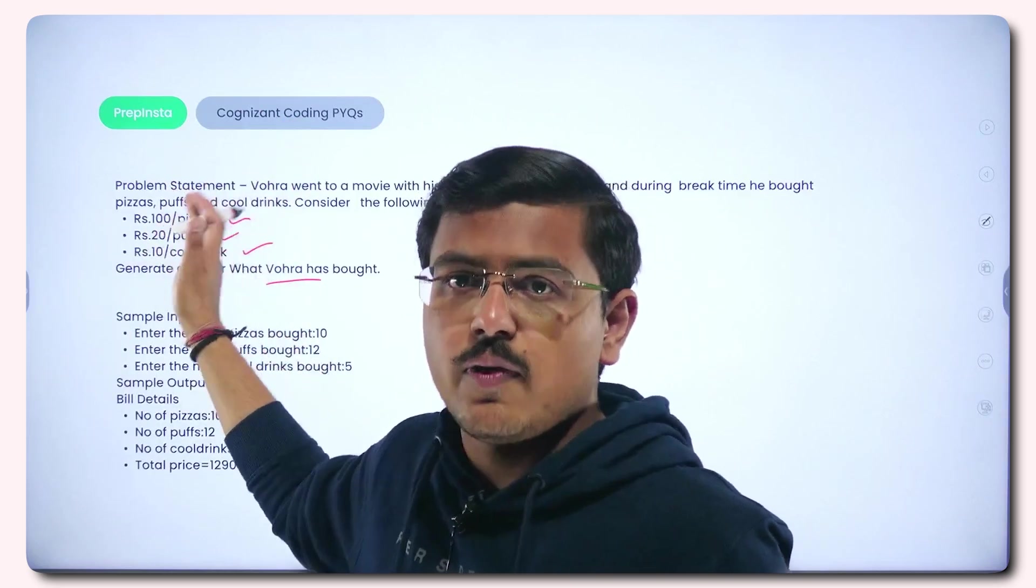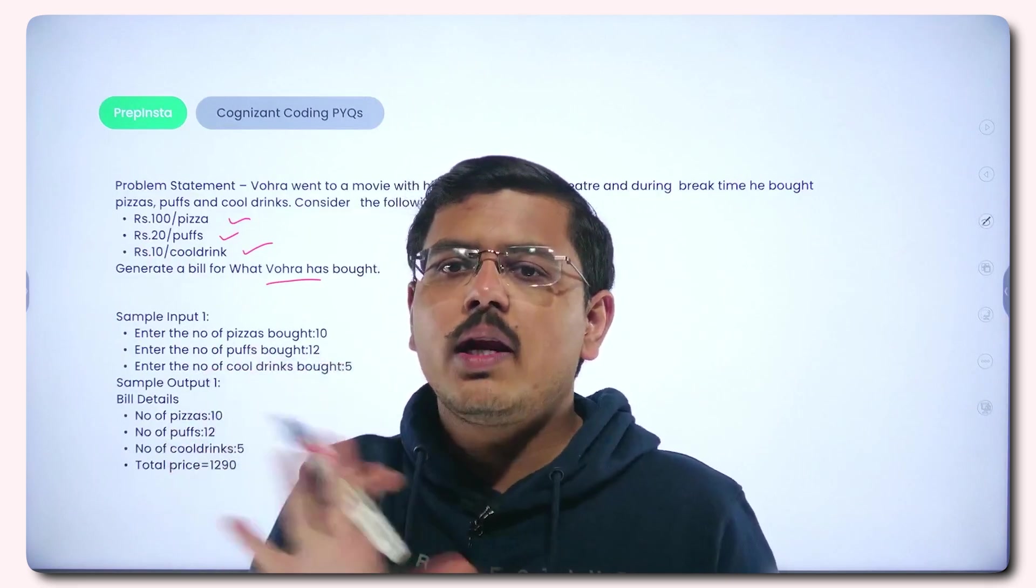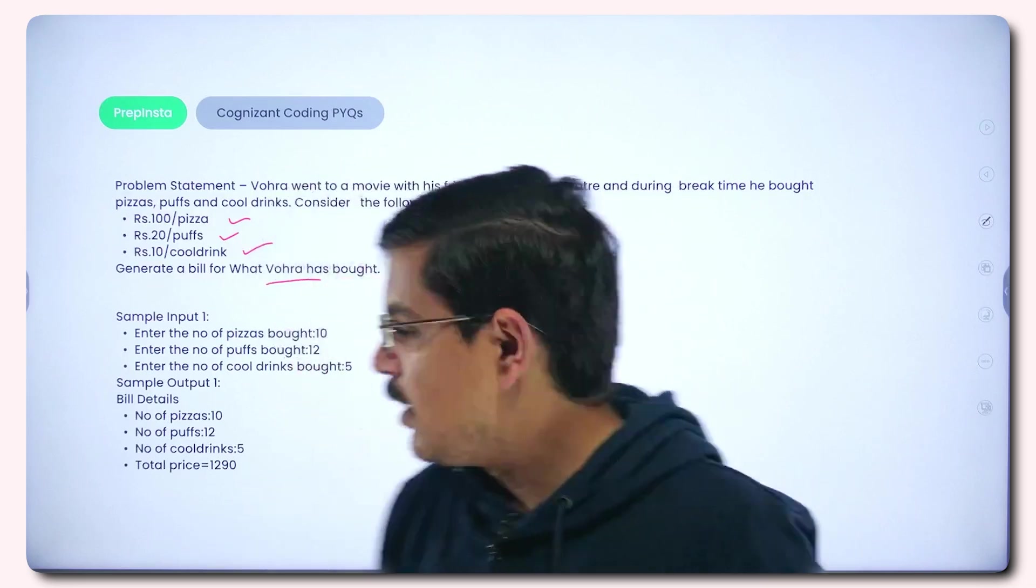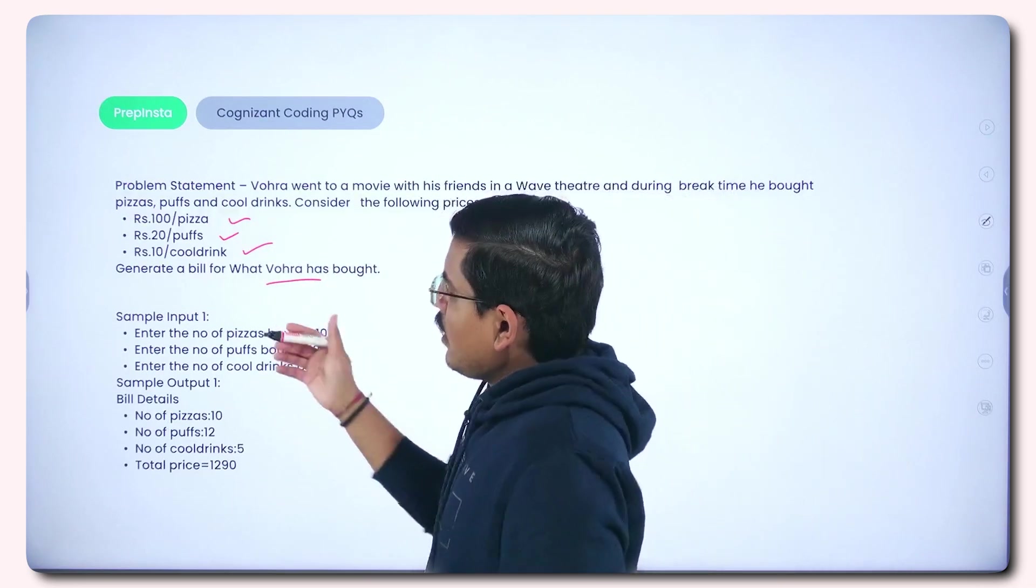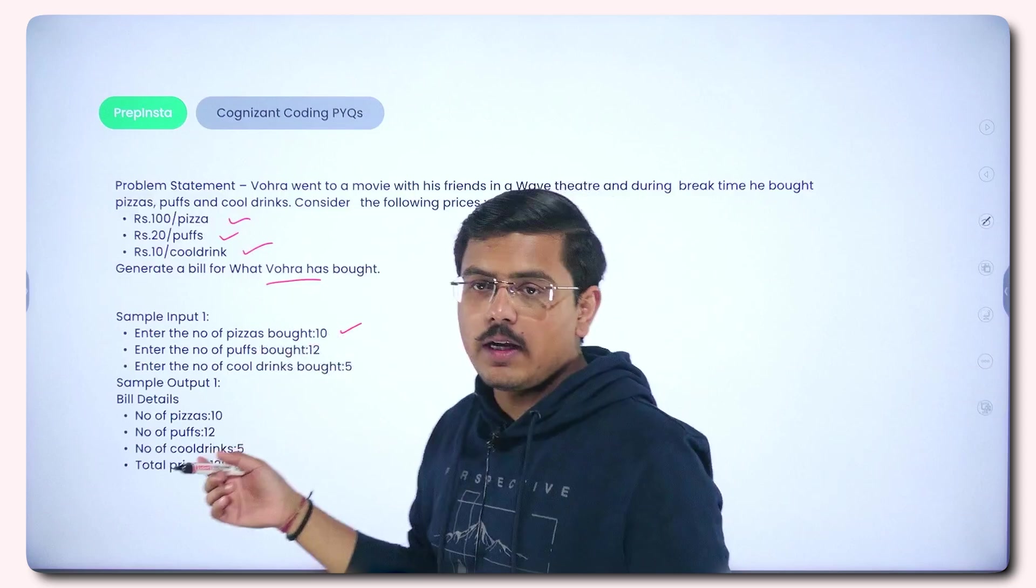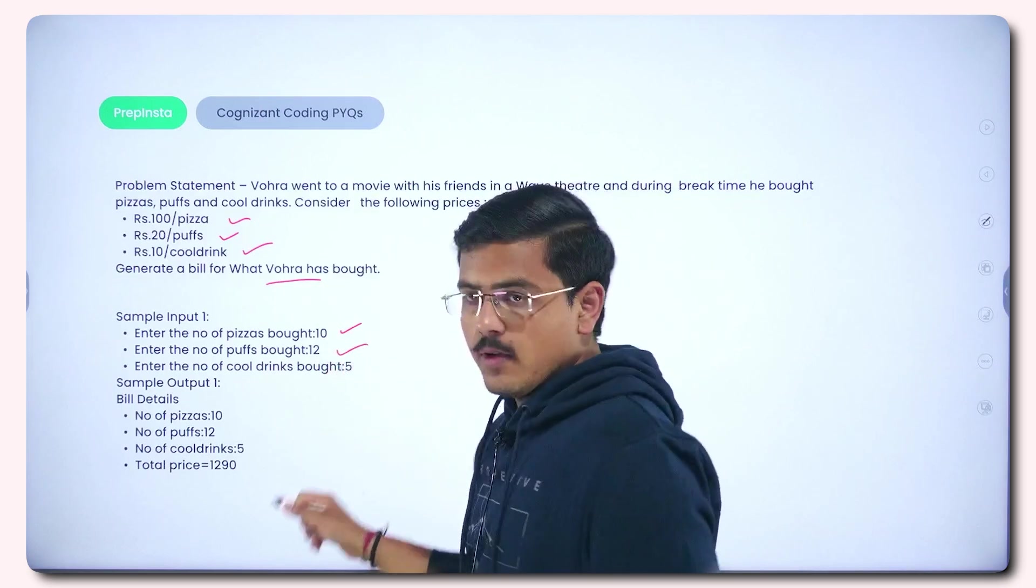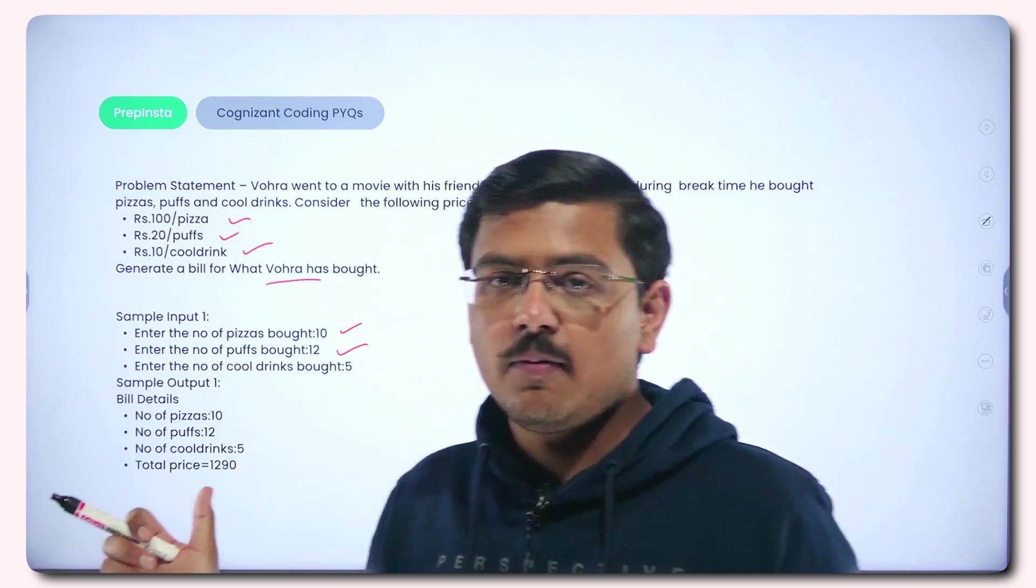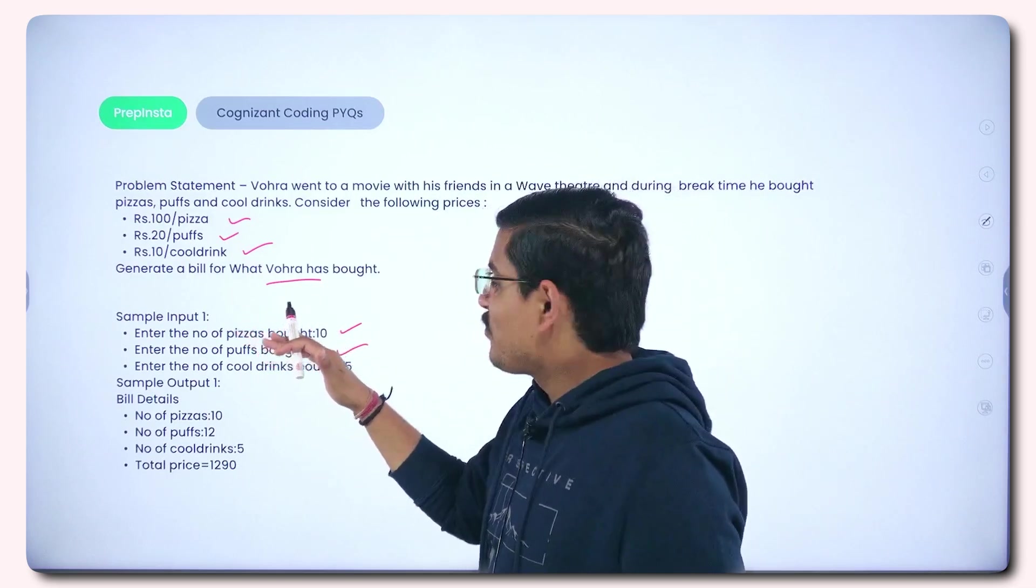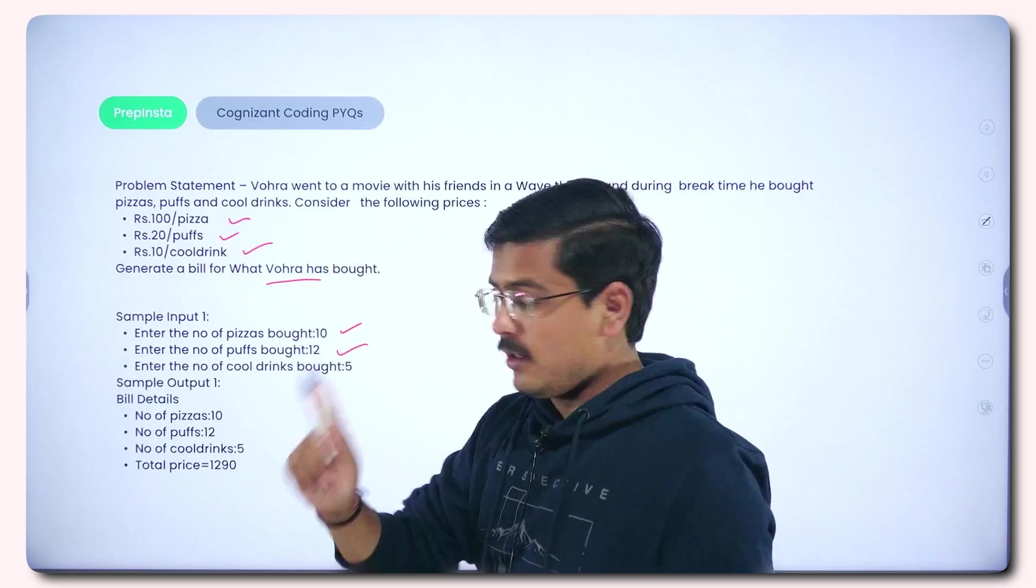Easy peasy question. For those who have practiced a bit, they'll say it is a cakewalk. For those who haven't, see, this will be the level of questions. One question will come of this level, so don't worry. All you need is hard work, perseverance, patience, and practice. Now they've given a sample input and sample output. Number of pizzas, he has bought 10 pizzas. I don't know what kind of appetite all his friends have that they can eat 10 pizzas. Number of puffs bought 12, so these are not humans, these are some eating freaks.